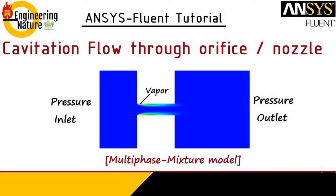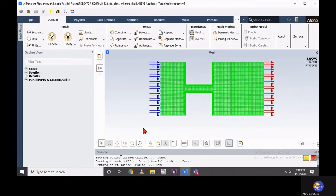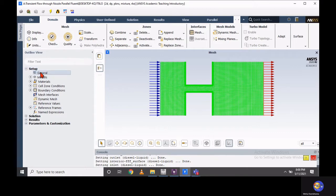Hello friends, welcome back to Engineering Nature. I hope you will be safe in this pandemic situation. So far we had covered single-phase, multi-phase, and spray simulation on this channel. Today I will demonstrate the use of Volume of Fluid model to capture the sharp interface of bubble generation during cavitation phenomena. To demonstrate this, I am going to use a similar geometry and mesh file which I had used in the previous tutorial, which you can find via the link in the description box.